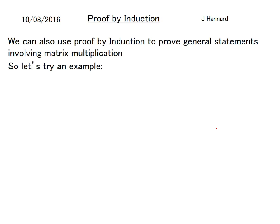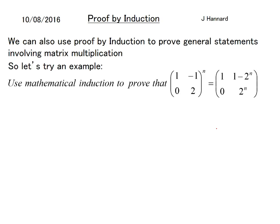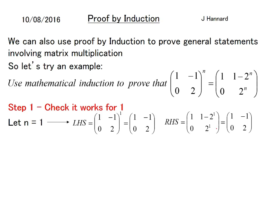We can also use proof by induction to prove a general statement involving matrix multiplication. So let's try an example. Use mathematical induction to prove that the matrix [1, -1; 0, 2]^n equals [1, 1-2^n; 0, 2^n]. So these are a little bit more complicated but we'll go with it. So step 1, check it works for 1. Let n equal 1 and on the LHS we've got all of that to the 1 which is simply itself. On the right hand side we'll stick a 1 where we see an n and we end up with the same thing, so it works for 1.